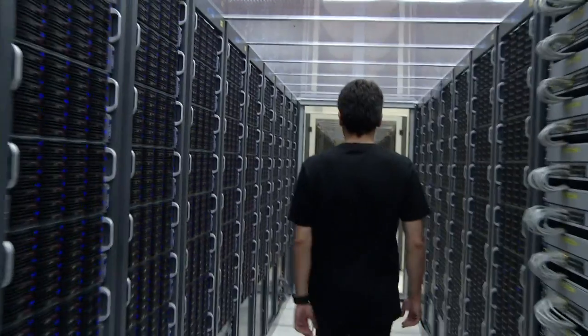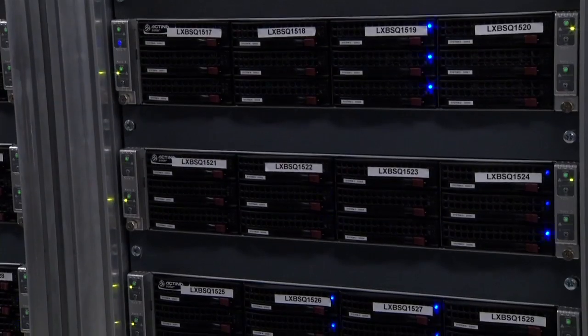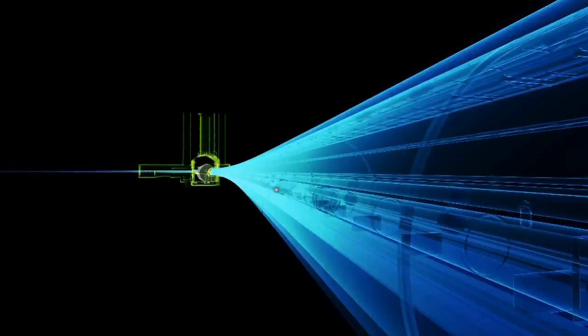These data have then to be reconstructed using complex algorithms and the massive computing power of the grid. The data that we actually collect from the detector is raw data, which is just millions of voltage readings from all the different parts of the detector at the time that we had a collision.